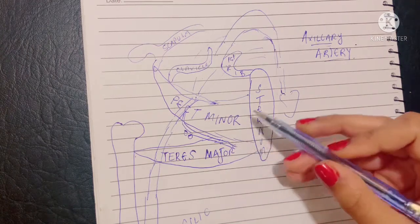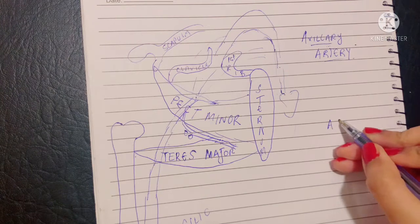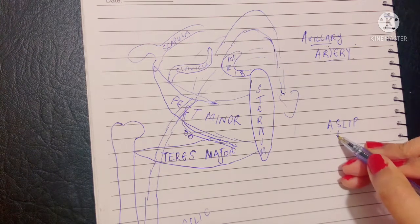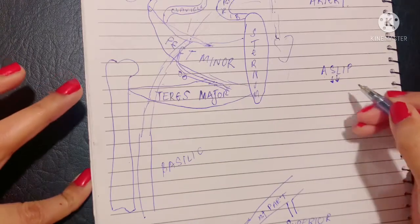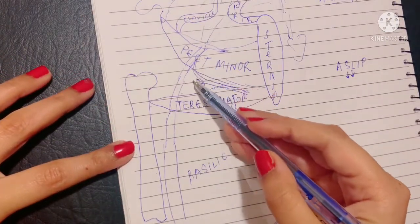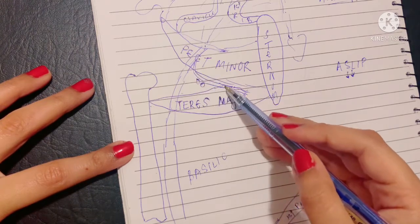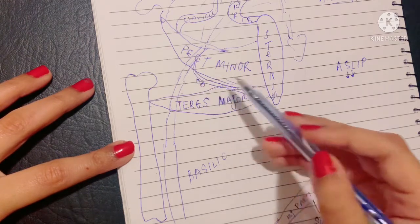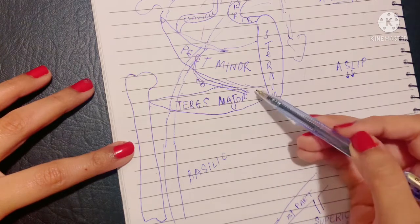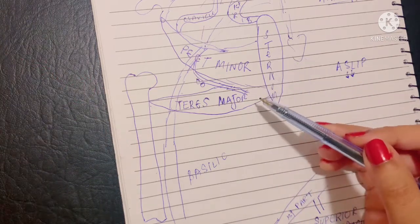If you guys remember that we had talked about the breast blood supply, the mnemonic was SLIP. This S was for superior thoracic. L was the lateral thoracic that we just talked about. So the lateral thoracic emerges at the second part and runs at the lower border of pectoralis minor in close relation with the anterior nodes and it ends by supplying these muscles and the breast and the chest wall.